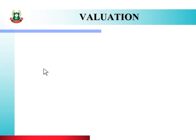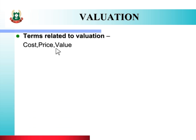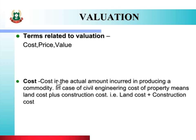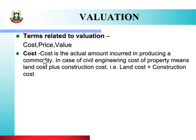Next, we will see some terms related to valuation: cost, price, and value. First is cost. Cost is the actual amount incurred in producing a commodity. In civil engineering, cost of property means land cost plus construction cost. Cost means the amount required to prepare a product, and in civil engineering it means land cost plus construction cost.